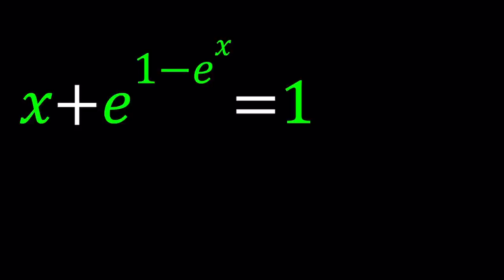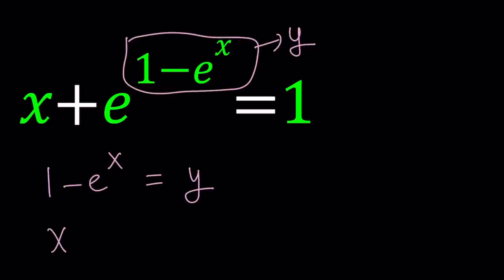So here's my approach. I'm going to use a very nice technique called substitution. I'm going to call this something, how about y? So what does that imply? This implies 1 minus e to the power x equals y. And of course by substituting that into the equation by replacing 1 minus e to the x with y we get another equation which is x plus e to the power y equals 1.